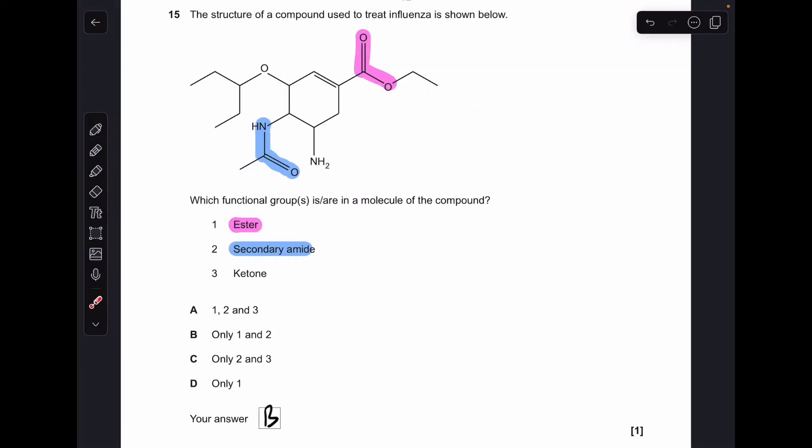Finally question fifteen, I've just colour coded the functional groups that are in the molecule. This is an ester group here, this is a secondary amide group because the nitrogen is directly bonded to the C double bond O, so that makes it an amide. You've got two carbons directly bonded to the nitrogen, so that's why it's secondary. We don't have a ketone group, that's not classed as a ketone because it's part of this amide group. Likewise, that's not classed as a ketone because they've got the single bonded O next to it, which makes it an ester group. We only had one and two, so B was the answer.